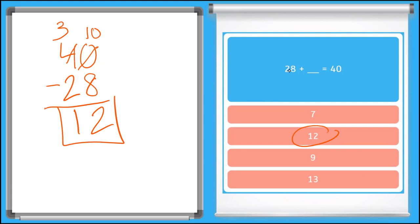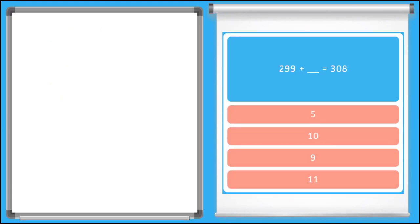Let's try one more. Ooh, look at this one. These numbers are big. We can do it, though. Same way. Let's take our sum, 308, and subtract our first number here, 299. And let's see what we get.